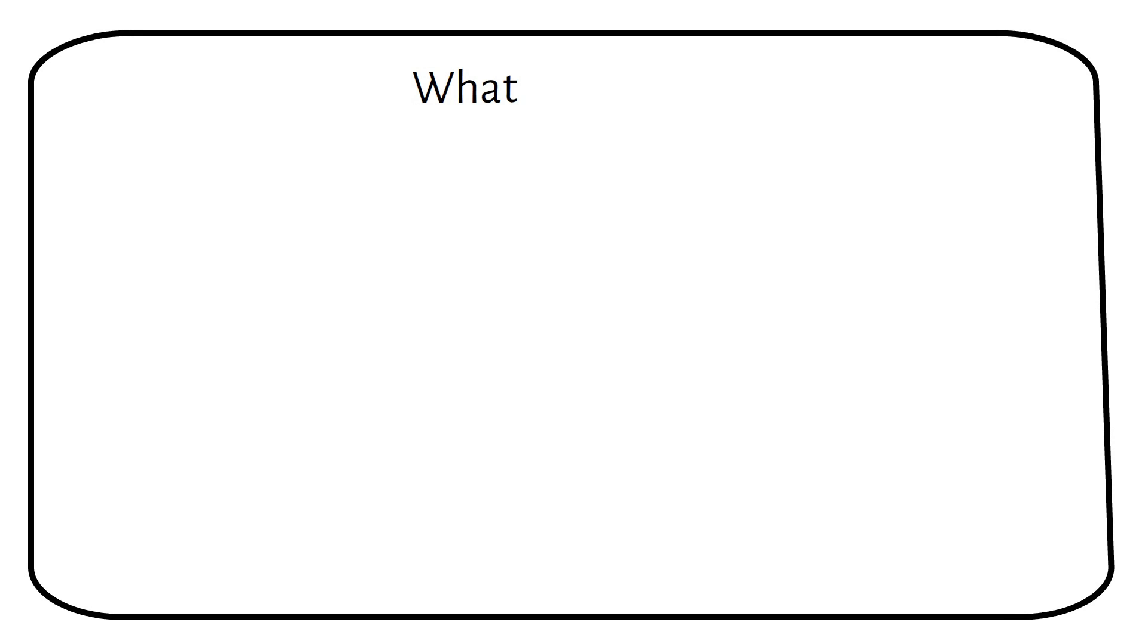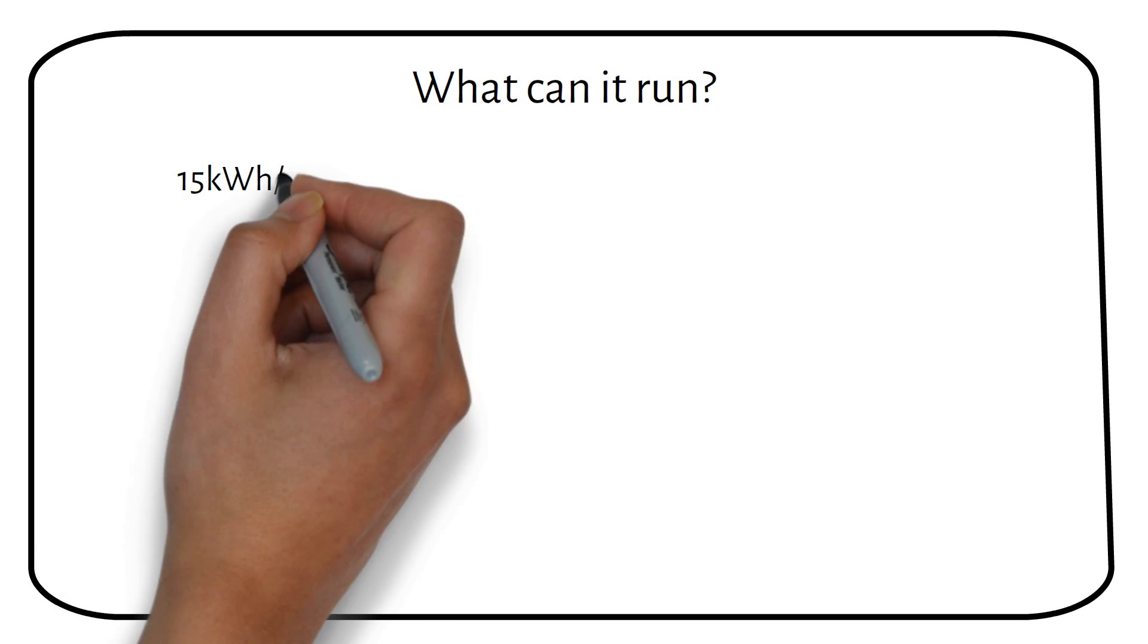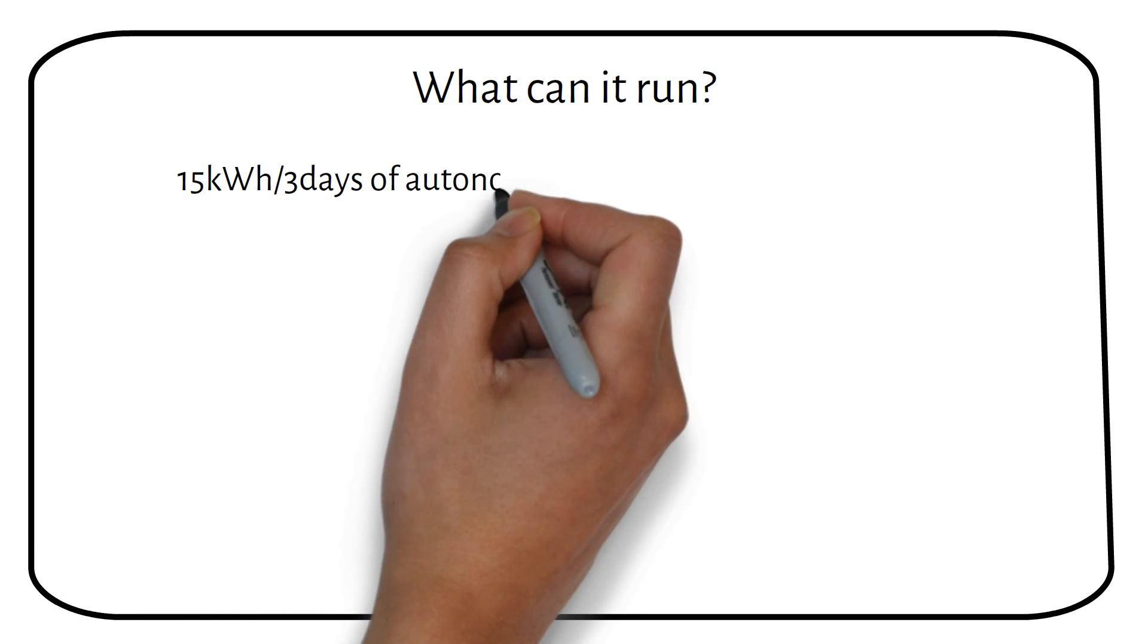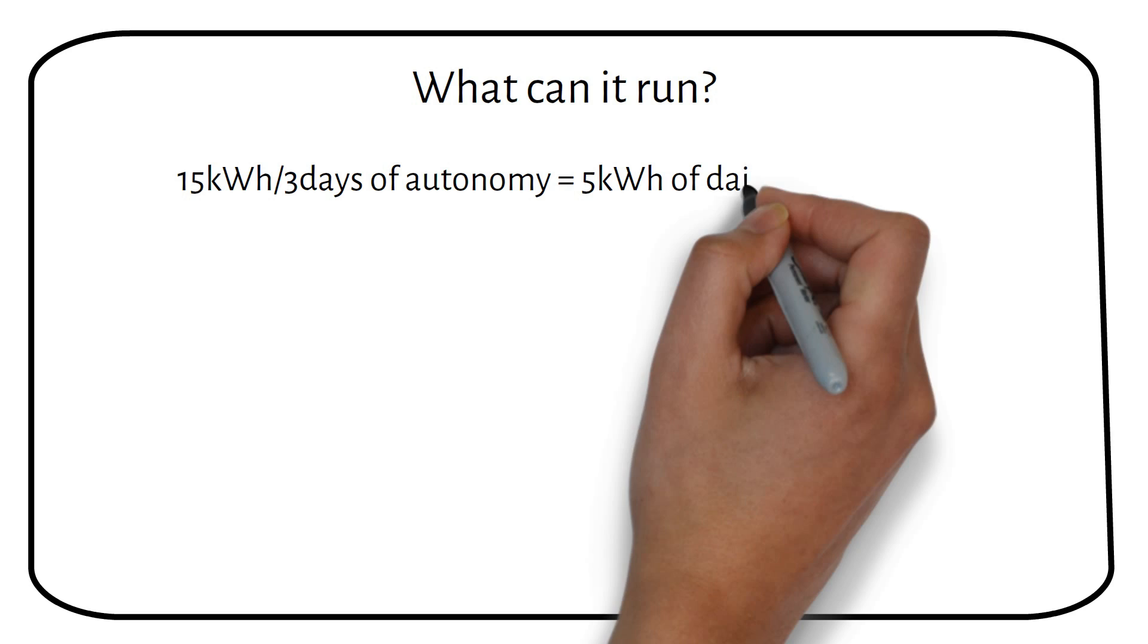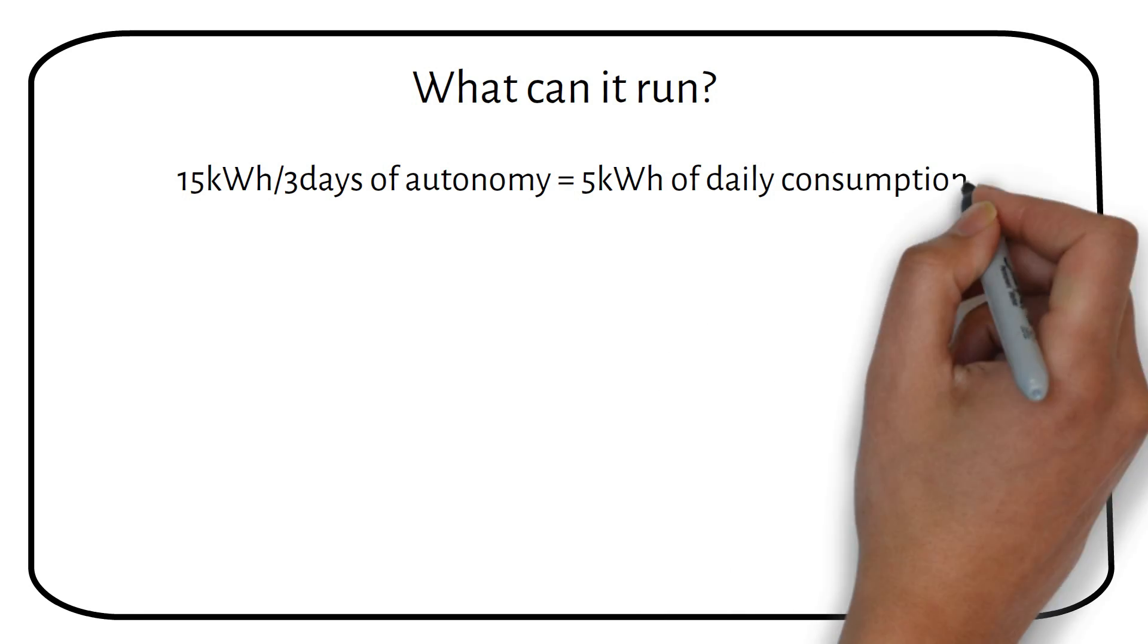Now, many of you might ask what the system can run. First, we must figure out how much power we can consume daily. Off-grid solar design states you need 3 days of autonomy. If we divide the battery total power of 15 kWh by 3 days, we have 5 kWh of energy consumption per day.